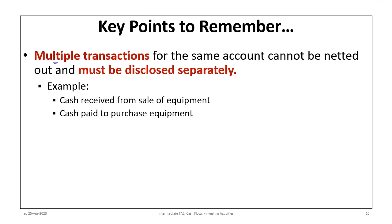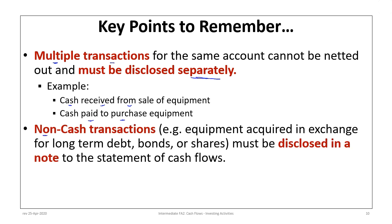If there are multiple transactions in the same account, they cannot be netted out — they must be disclosed separately. For example, cash received from the sale of equipment and cash paid to purchase equipment must appear separately so users can see exactly what happened. Any non-cash transactions must be disclosed in a note to the statement of cash flows — for example, equipment acquired in exchange for long-term debt, bonds, or shares.